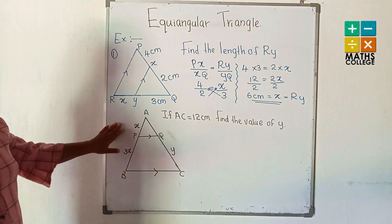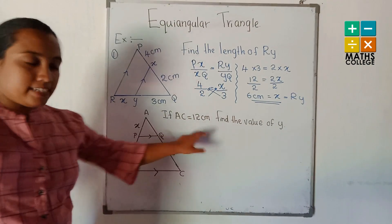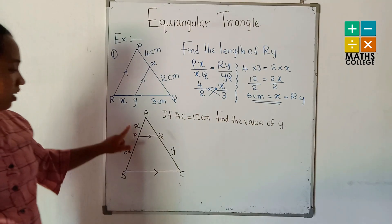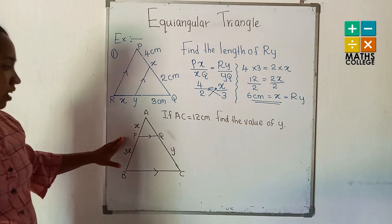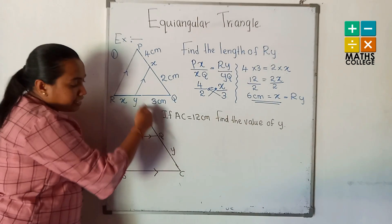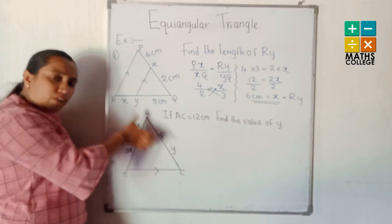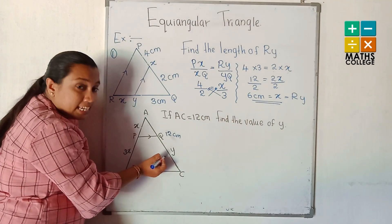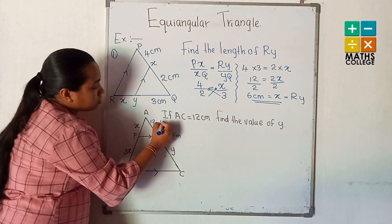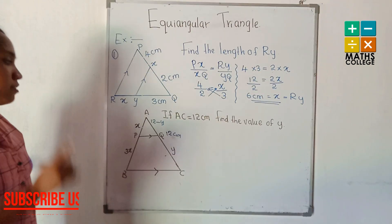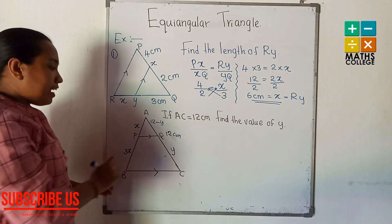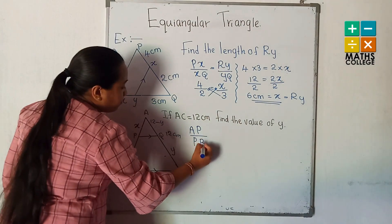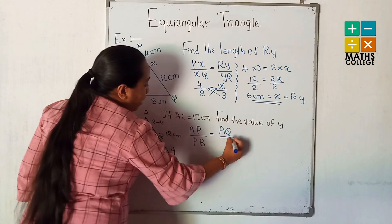Let's go to the second example. If AC equals 12 cm, find the value of Y. Here Y is part of the line. If the total length of AC is 12, and Y is one part of this line, then AQ equals 12 minus Y. Now apply the theorem — write the relationship: AP divided by PB equals AQ divided by QC.